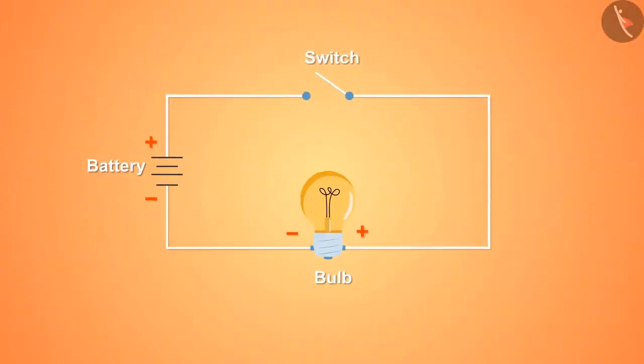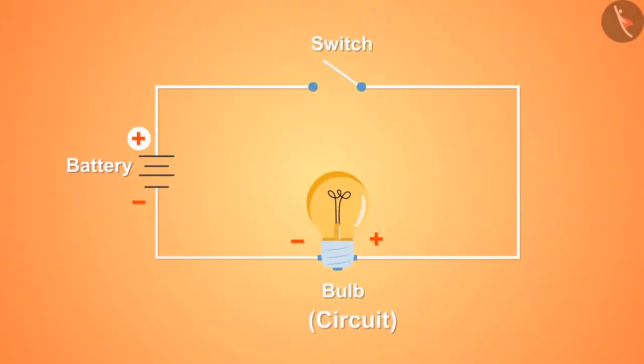This diagram shows a circuit in which the positive terminal of the battery is connected to the positive terminal of the bulb via wires through a switch and the negative terminal of the battery is connected to the negative terminal of the bulb.